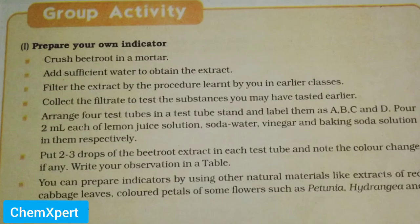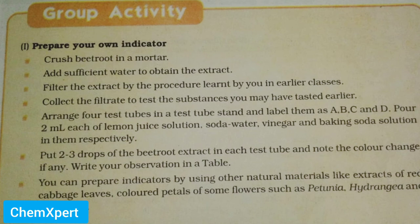You can easily try this activity at home. You only require beetroot as an indicator. For acid, you can take lemon juice, tomato juice, apple juice, or soda water — for example, any colorless soft drink like Sprite. For the base, you can use a soap solution or a baking powder solution. If you try this activity at home, do write your observation in the comment box — what color you obtain when you add your beetroot sample to the given samples.